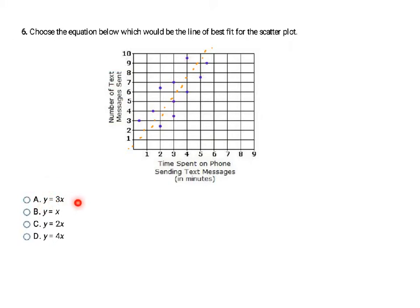For A, there's no constant at the end, so I start at zero with a slope of 3 — rising up 3 and running 1. After plotting a few points, this line goes steeper and puts most of the data points below it, so it's not going to be A.